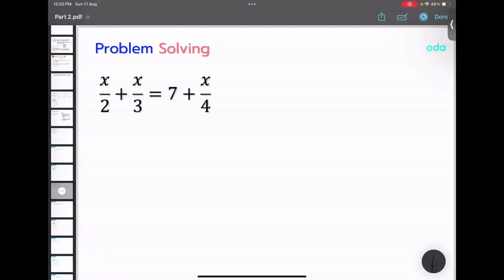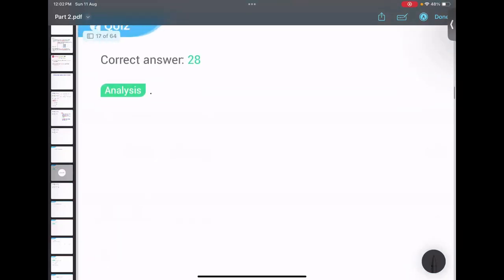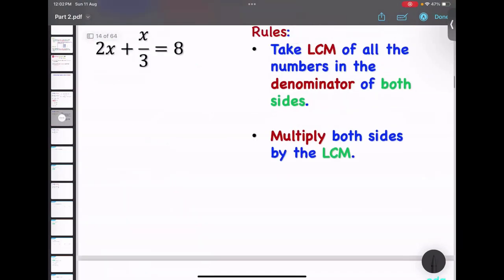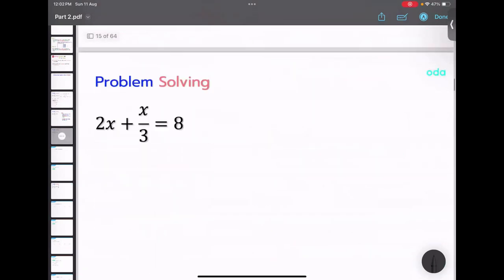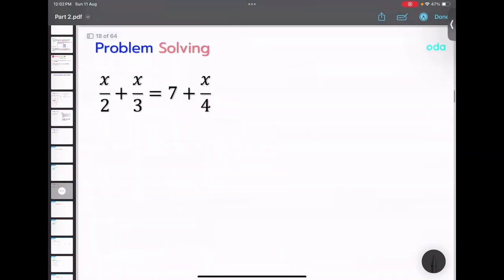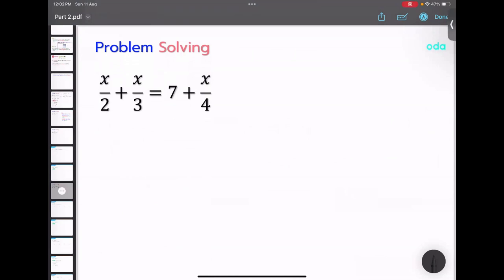So as you can see, over here we have denominator as numbers. So we will be following the same procedure what we did earlier. LCM on both the sides and multiply the LCM. Now the procedure you guys are doing is a little bit long. Just pay attention. What is the LCM of this question? 12. LCM is 12.